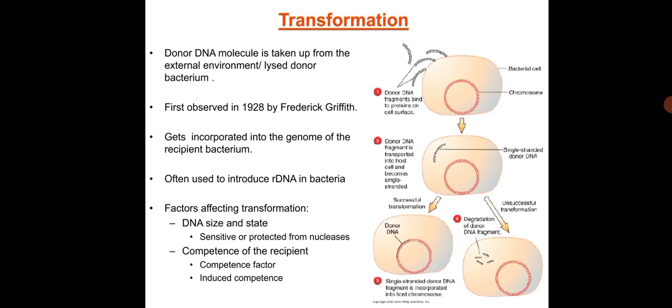Transformation is often used to introduce recombinant DNA into bacteria. Factors affecting transformation include DNA size and state — whether the donor DNA is sensitive or protected from nucleases — and the competence of the recipient, whether natural or induced.